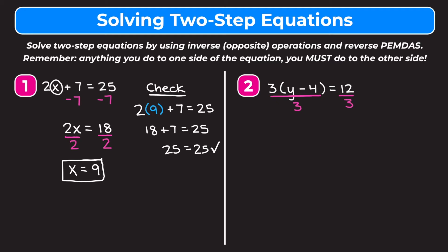On the left side, 3 divided by 3 is 1, so those cancel out and we're left with y minus 4. On the right side, 12 divided by 3 is 4. So now we have y minus 4 is equal to 4.